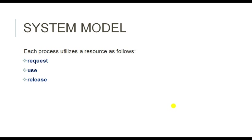This is the system model. Generally, in a system there are a number of processes available and each process uses a resource. Without a resource, a process cannot do anything, so every process needs or utilizes a resource. First it requests the resource, then it uses the resource, and after that it releases the resource.